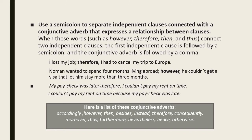There are two ways of joining independent clauses. Using a conjunctive adverb: 'My paycheck was late; therefore, I couldn't pay my rent on time.' Here a semicolon precedes the conjunctive adverb. Alternatively, using a conjunction: 'I couldn't pay my rent on time because my paycheck was late.' When we use a conjunction like 'because,' we do not use a semicolon to separate the two clauses.